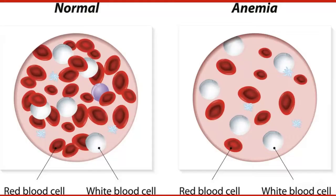Anemia is a condition that indicates that there are not enough RBCs in the blood to supply the required amount of oxygen to the cells.